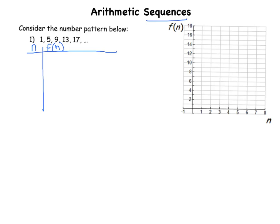I want to view the 1, 5, 9, 13, and 17 as my outputs, so I'm going to put them in this column. My inputs, well since the one is my first number or first term, I'm going to call that term 1, I'm going to call the 5 term 2, the 9 term 3, etc.